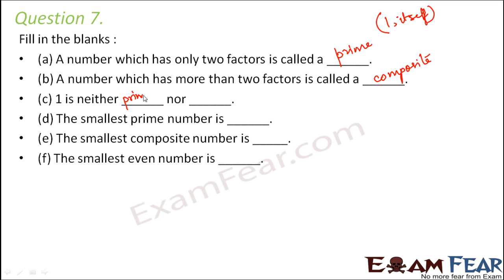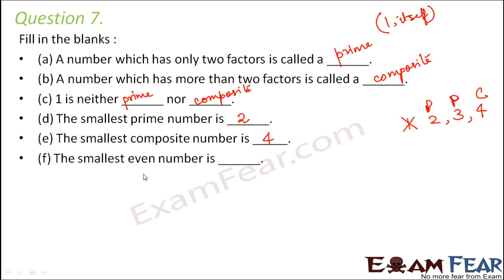1 is neither prime nor composite. The smallest prime number is 2. The smallest composite number is 4, because 1 is neither prime nor composite, 2 is a prime number, 3 is also a prime number, and 4 is a composite number. The smallest even number is 2, because 1 is neither even nor odd, and 2 is divisible by 2.